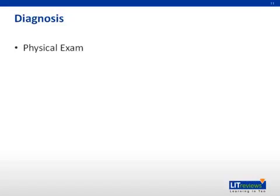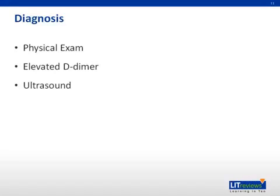Making the diagnosis of thrombophlebitis includes a physical exam. An elevated D-dimer is not very specific but is very sensitive for a DVT — if you don't have an elevated D-dimer, it's very unlikely you have a DVT. All patients with superficial thrombophlebitis above the knee should undergo duplex ultrasound as the initial diagnostic modality to rule out DVT. When the patient has superficial thrombophlebitis below the knee, duplex ultrasound is only indicated for signs and symptoms consistent with a DVT, including asymmetric swelling, erythema, and pain.